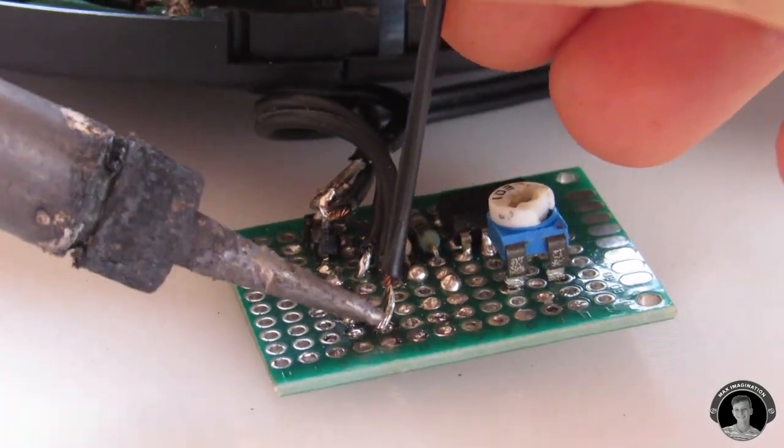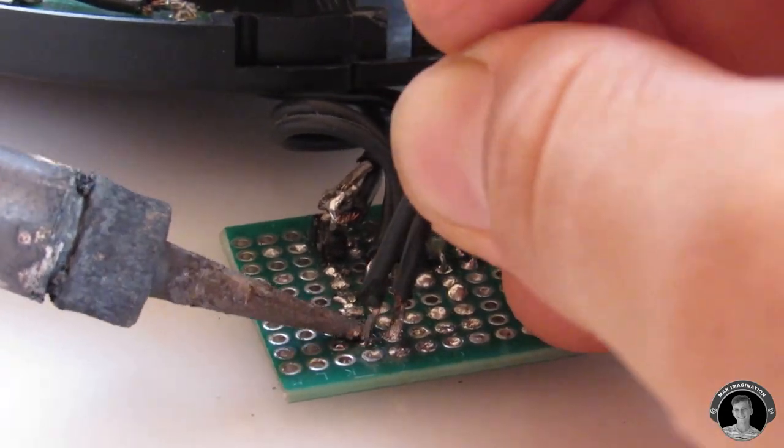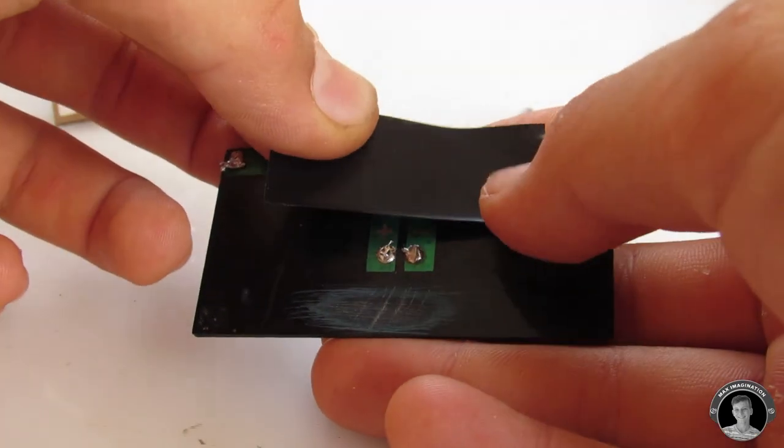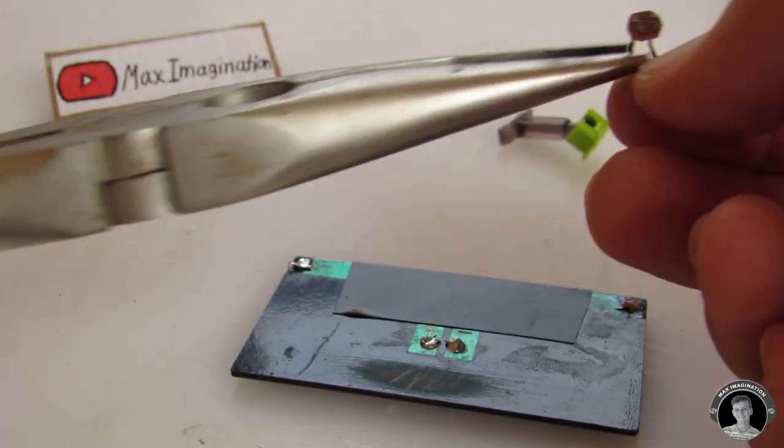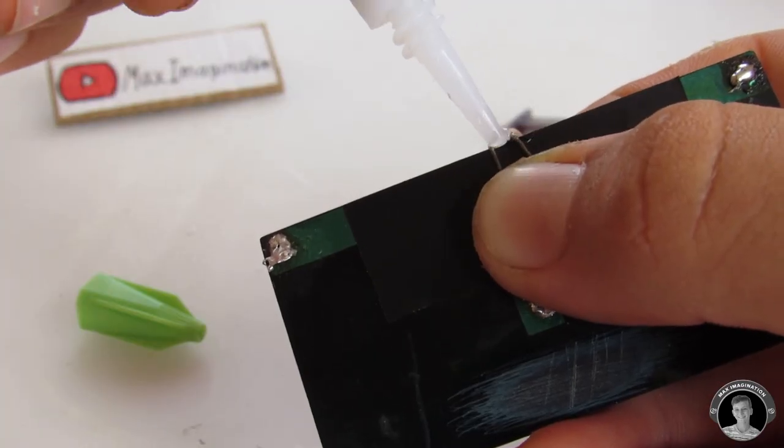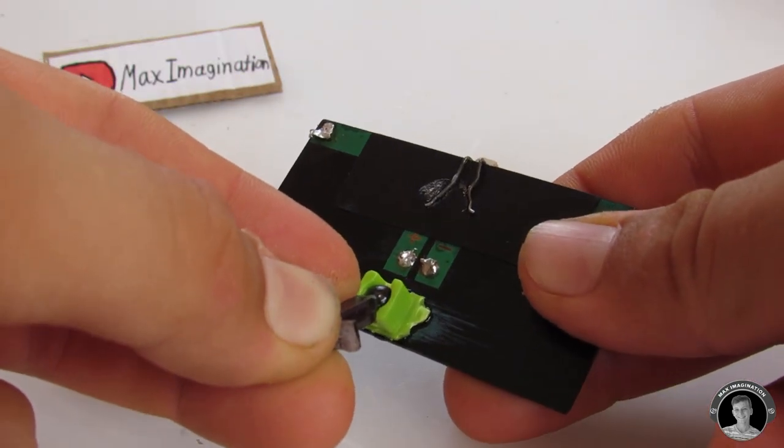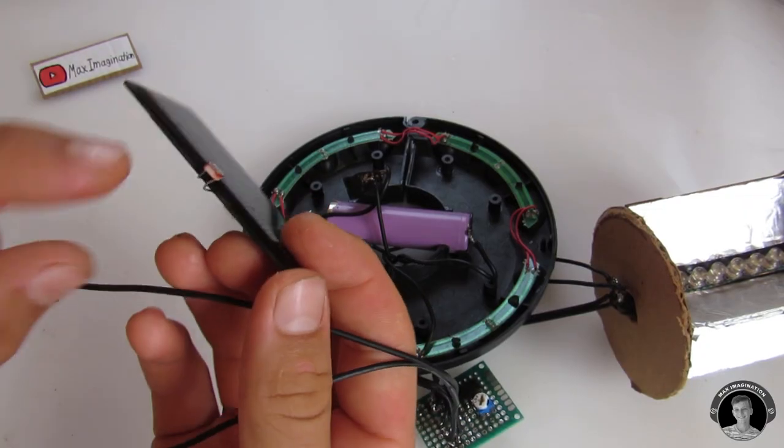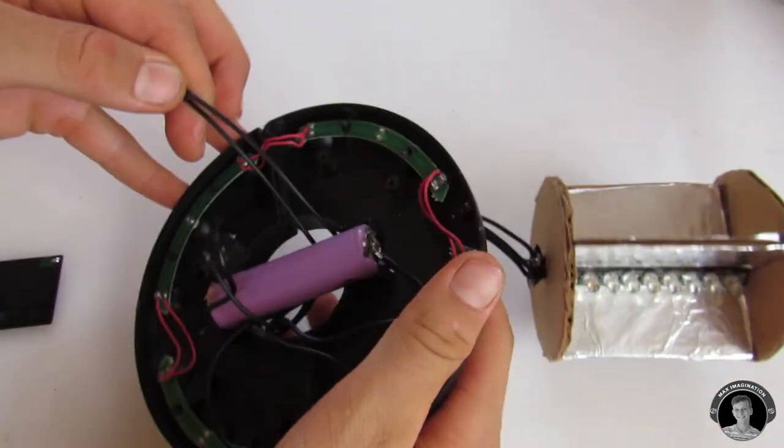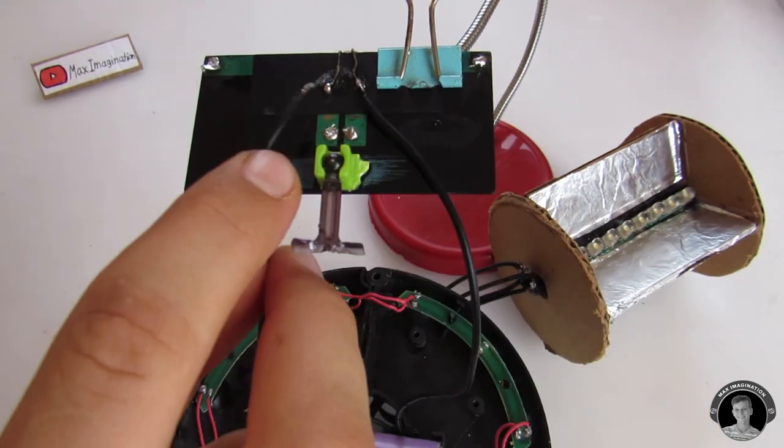Since we want the photoresistor on the outside of this lamp so it can reach the sunlight, I'm going to extend its connection with a couple of wires. I thought it would be a good idea to put the light dependent resistor onto the solar panel facing the same way so that it is more sensitive to the light. So I'm going to feed through the two photoresistor wires coming from the circuit to the photoresistor that is glued to the solar panel.